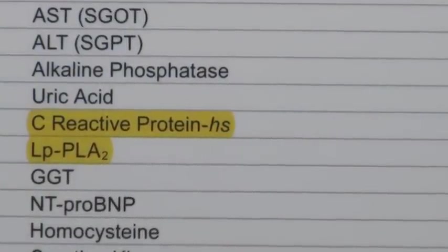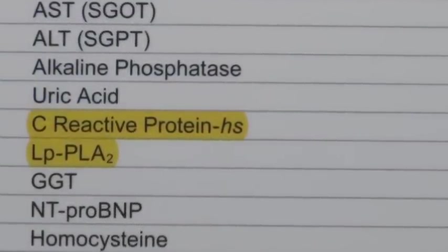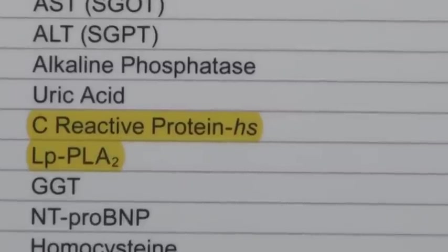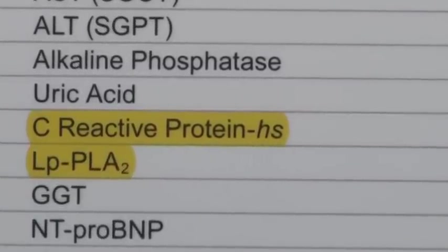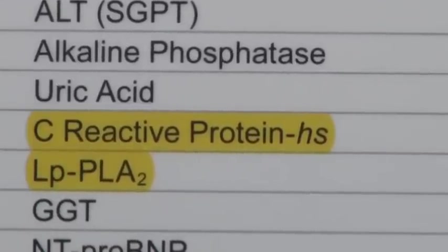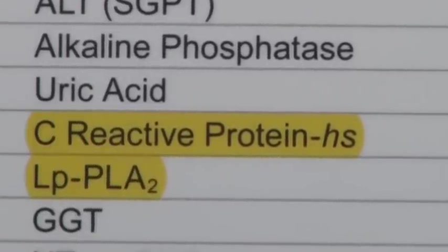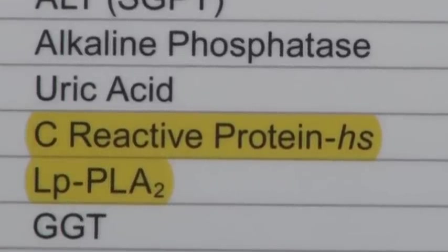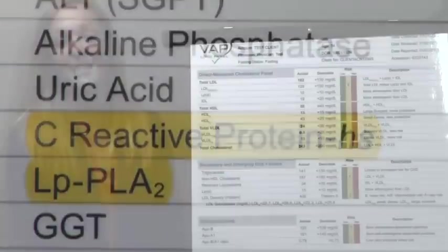Next are inflammatory markers. C-reactive protein HS will show nonspecific inflammation, which over time leads to increased cardiovascular disease risk. LP-PLA2, or the plaque test, shows the level of vascular inflammation, which if elevated shows a higher risk of stroke.